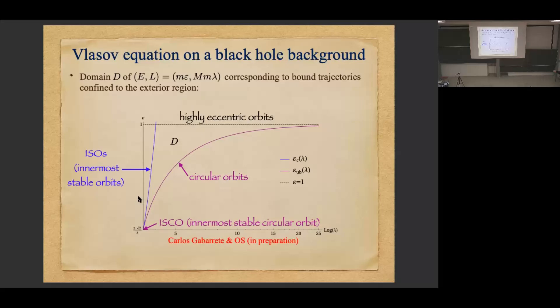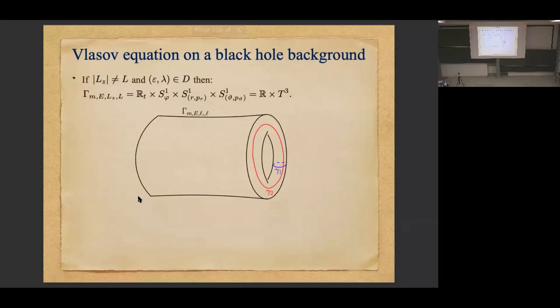These orbits with energy smaller than one but angular momentum too small correspond to highly eccentric orbits. Everything inside this domain characterizes bound orbits in the exterior of Schwarzschild. From what I said, if L_z ≠ L and (ε, λ) is in this set, then these invariant submanifolds are topologically ℝ × T³. The T factor comes from t giving an ℝ, the φ giving a loop, r-p_r giving a loop, and θ-p_θ giving a loop — so they are non-compact because of this time direction.